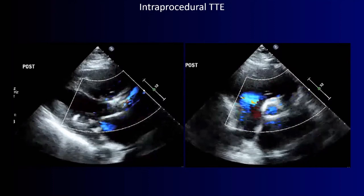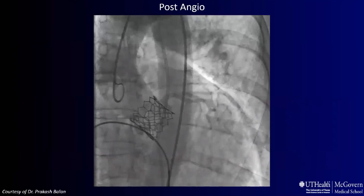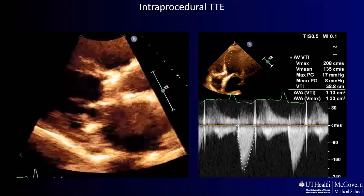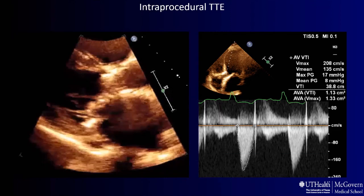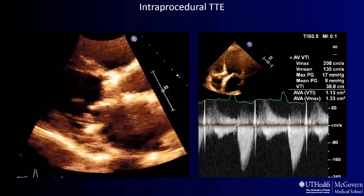Immediately after valve deployment the sonographer takes images looking for any issues, complications, or significant paravalvular regurgitation. You can see a little bit of regurgitation that is intravalvular and related to the wire still across the valve. Angiography may also be performed to assess for significant regurgitation. Prior to the patient leaving the lab, a comprehensive hemodynamic evaluation of valve velocities and evaluation for paravalvular aortic regurgitation from multiple views is performed. Post-procedure imaging with TTE includes assessment of the ventricles, valve structure, position, stability, motion, expansion, shape, any regions of separation between the valve stent and the annulus, valve hemodynamics, and the presence of any paravalvular regurgitation — its severity and location.